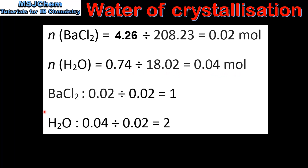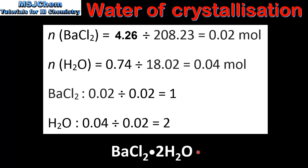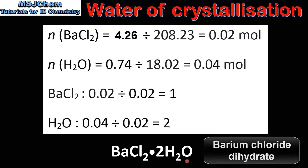We then divide each of these values by the smallest to give the lowest whole number ratio — that's 1 for the anhydrous BaCl₂ and 2 for the H₂O. This gives us the formula for the hydrated salt: BaCl₂·2H₂O. The name of the salt is barium chloride dihydrate.